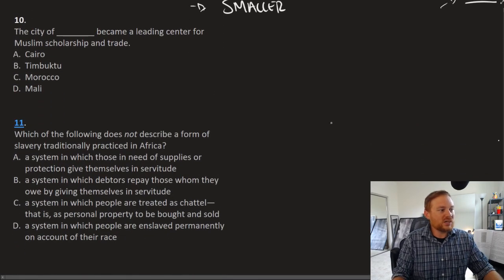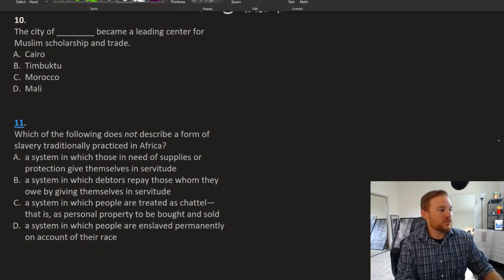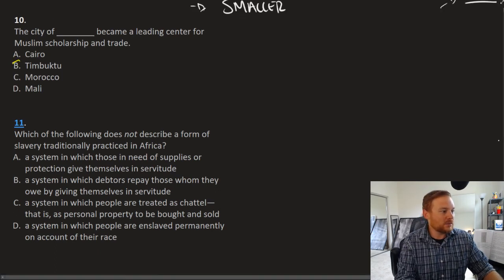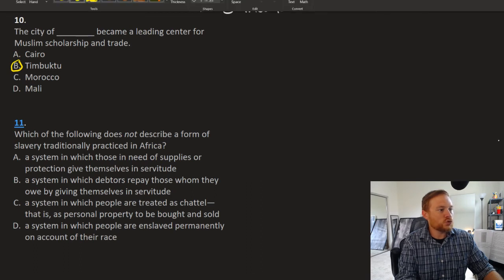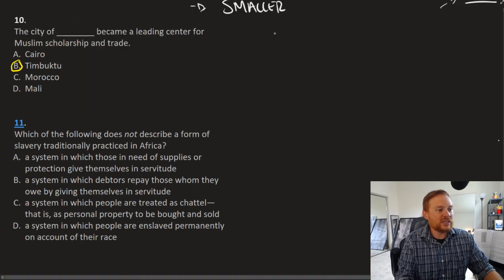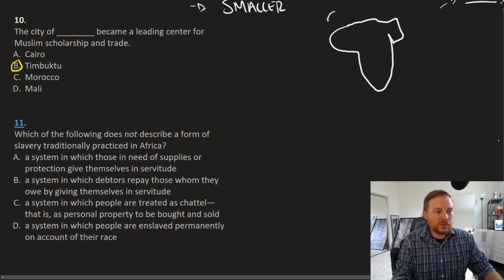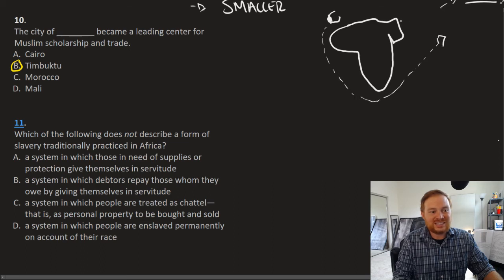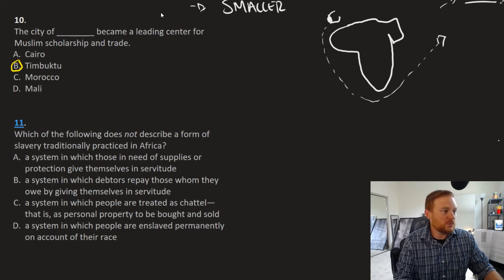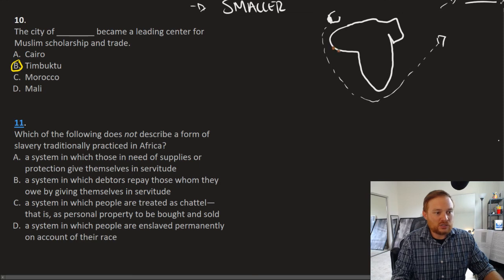Question number 10. The city of blank became a leading trading center for Muslim scholarship. The answer is Timbuktu. This is a question referring to the empires in Africa prior to the arrival of Europe. So we'll draw Africa here. Here's Saudi Arabia. Here's Northern Africa. Kind of a bad map there. But recall that Spain and Portugal are located here. Portugal initially beginning the age of exploration desired to sail around Africa to get to trade goods in the east. In doing so, maybe let's use a different color here. Established trading cities and ports along Africa.